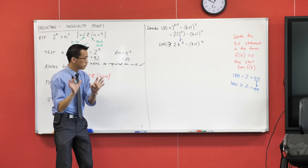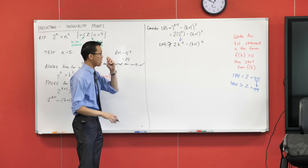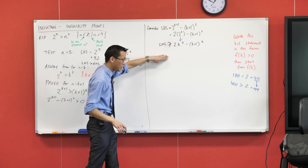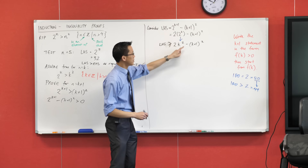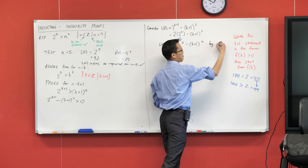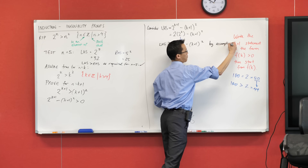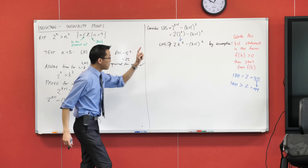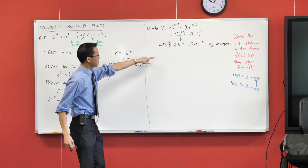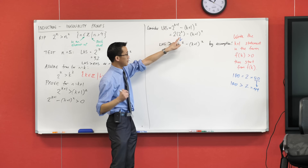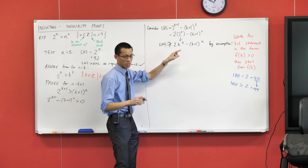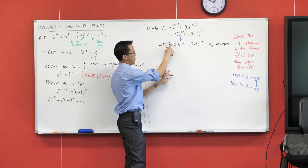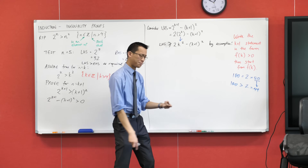Do you see that? This is really different. We're changing an equation into an inequality, and the reason we can do that is because we've made this assumption — by assumption. We can make this statement because I've now, according to the assumption, substituted something bigger for something smaller. So now I've got a smaller result; that's why this is the smaller side of things.